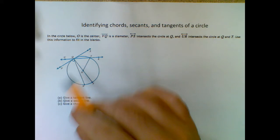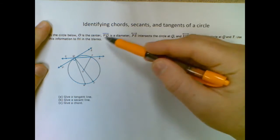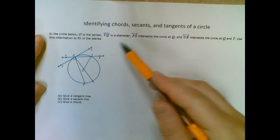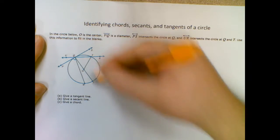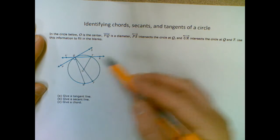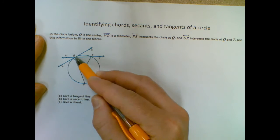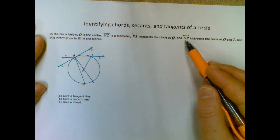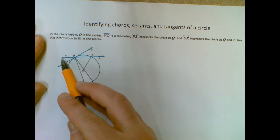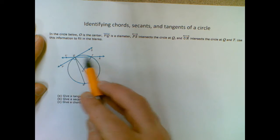So we have a circle below O in the center. VQ is a diameter, so it's cutting straight across there. PS intersects the circle at Q, so here just barely hits there at Q, and the line UR intersects at Q and T, so it's cutting across the Q and T.